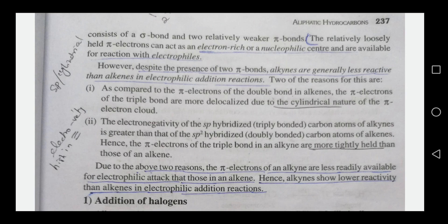In the triple bond, the pi electron cloud is more delocalized due to its cylindrical nature, so the pi electrons are not readily available for electrophilic attack. The second reason is electronegativity: the sp-hybridized carbon of alkynes is more electronegative than the sp2-hybridized carbon of alkenes.